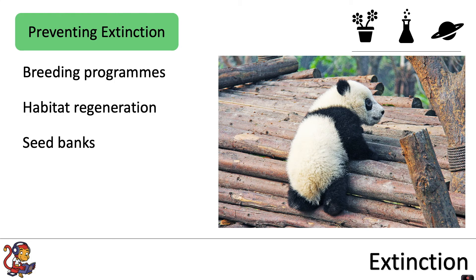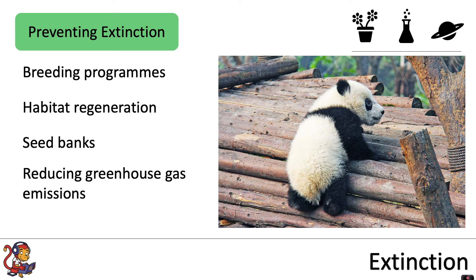Plants too are subject to extinctions, so we have seed banks, which are labs that store seeds of rare plants. These can be used to breed new plants and, when suitable, plant those back into the wild to try and increase natural populations. We could also reduce our greenhouse gas emissions.